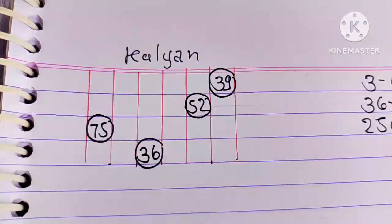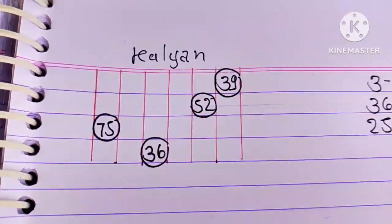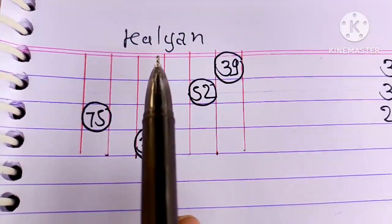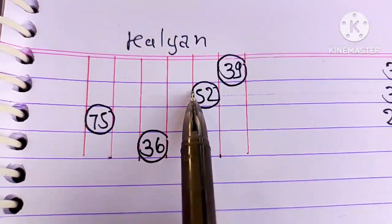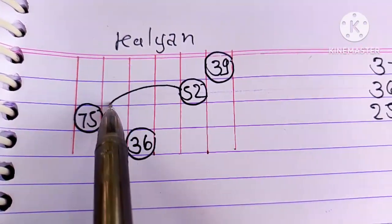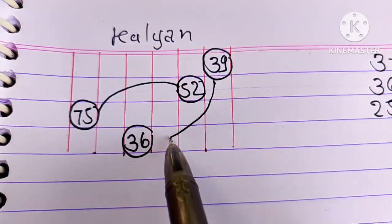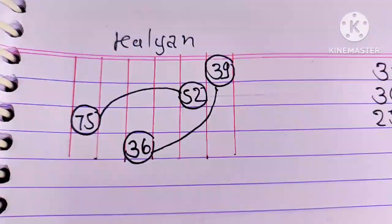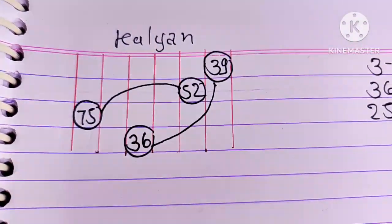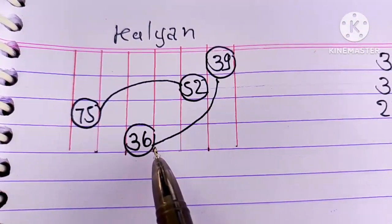8, 10, 203 Kalyan. The first round, the third round is 36. Single open 3, single close 6.